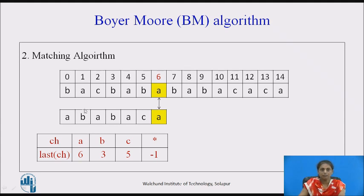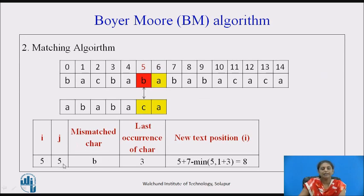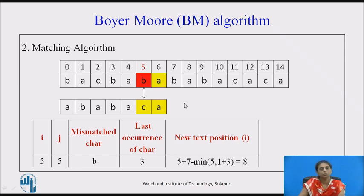Using the last occurrences already calculated, we place our window with I at position 6 and J also at position 6, using 0-based indexing. M is the number of characters in the pattern. A and A match, so we decrement both pointers. I and J become 5, but there is a mismatch — the mismatch character is B. The last occurrence of B is 3. The next position is calculated as I plus M minus the minimum, giving position 8, so we align the window to text position 8 where B aligns to B.